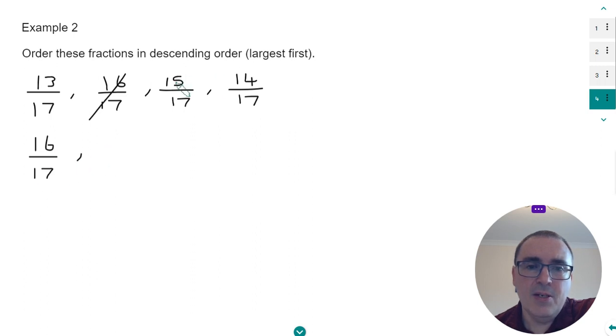Our next biggest numerator is 15, so 15 seventeenths comes next. Our next biggest numerator is 14, so that would be the next fraction, 14 seventeenths. So our smallest fraction would be 13 seventeenths.